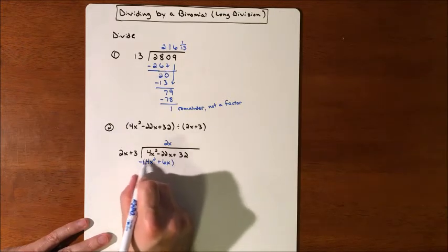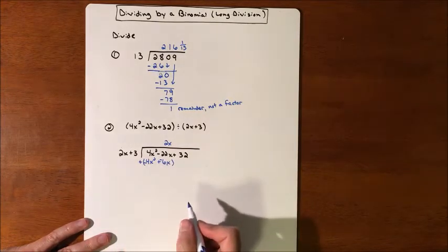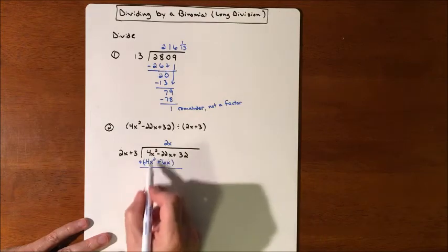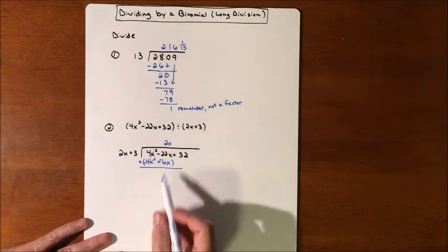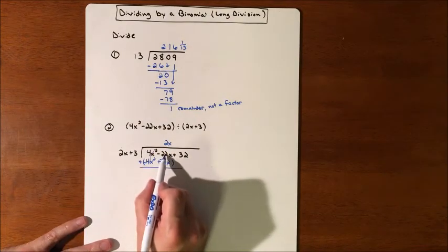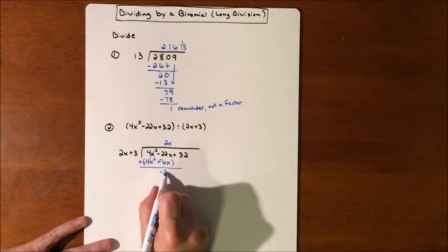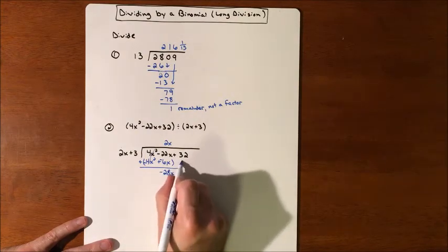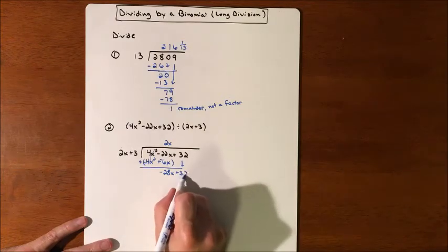We're just going to distribute the negative in. So we're going to subtract those pieces, and this should cancel every single time. If it doesn't, then you didn't pick the right term. So that cancels. Negative 22 and a negative 6 makes negative 28x, and we bring down plus 32.